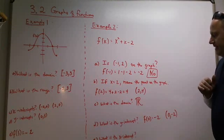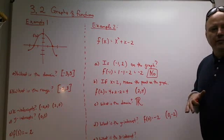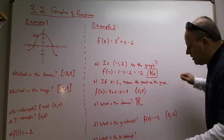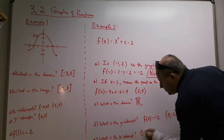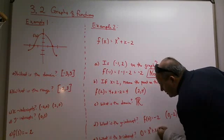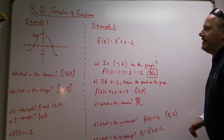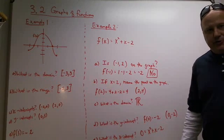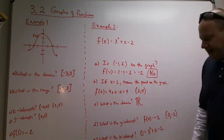And then the x-intercept is where the y-coordinate, remember the y-coordinate is the same as f of x. So 0 equals x squared plus x minus 2. Now we did this from a previous section back in chapter 2. We were able to solve equations like that. This one actually factors. It's x plus 2 times x minus 1.